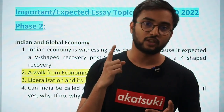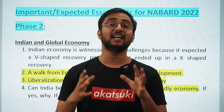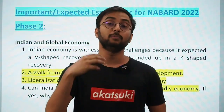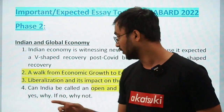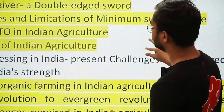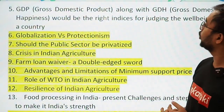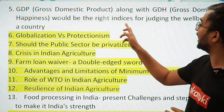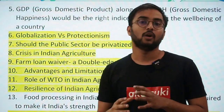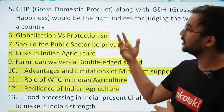Next topic: GDP along with Gross Domestic Happiness (GDH) would be the right indices for judging the well-being of a country — a debate on whether to measure development by GDP or GDH. Then globalization versus protectionism — globalization is seeing its reverse effect due to protectionism, as seen in trade wars between the United States and China, making this topic very important.